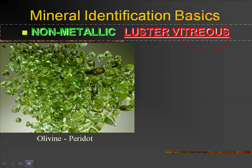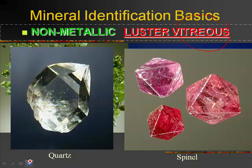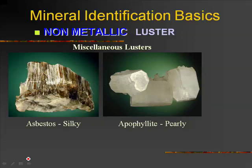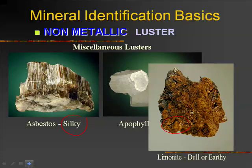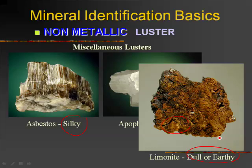Quartz would be an obvious example of vitreous luster. It looks like glass, but remember, it doesn't have to be clear — it just has to look glassy. It could be a silky luster, like asbestos, or pearly. It could be dull or earthy, which means it just looks dull, like dirt. Or resinous — it looks like resin, kind of waxy and weird.